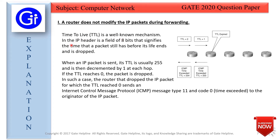TTL is a well-known mechanism in the IP header — it is a field of 8 bits that signifies the time a packet has before its life ends and is dropped. When an IP packet is sent, its TTL is usually 255 and is then decremented by 1 at each hop. If the TTL reaches 0, the packet is dropped, and the router sends an ICMP (Internet Control Message Protocol) message type 11, code 0 — Time Exceeded — to the originator of the IP packet.